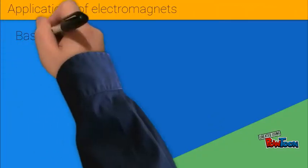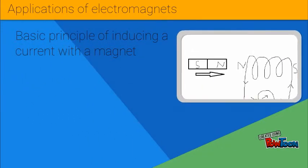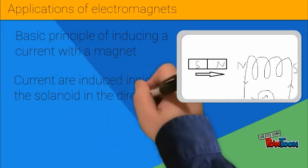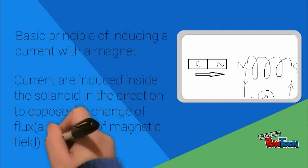Now let's start with the applications of electromagnets. Current are induced inside the solenoid in the direction to oppose the change of flux, which is a property of magnetic field made by moving the bar magnet.